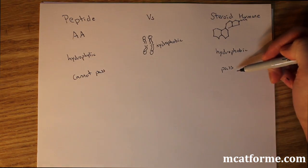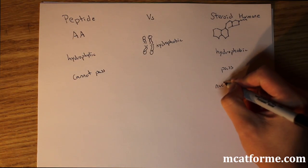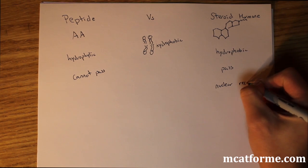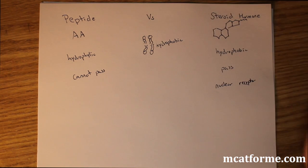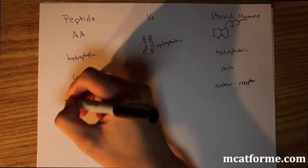So because steroids can pass through, there will be a nuclear receptor that they bind to. They bind to a nuclear receptor versus peptides which bind to a cell surface receptor, and this is the G protein receptor.